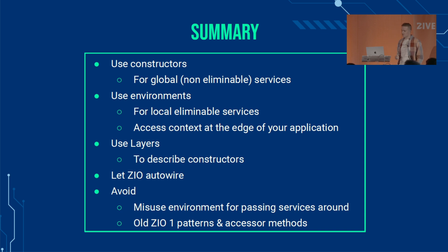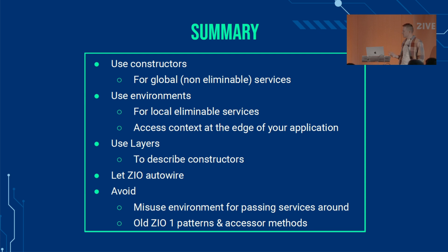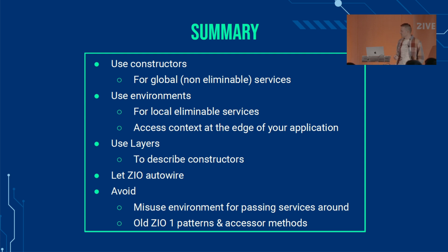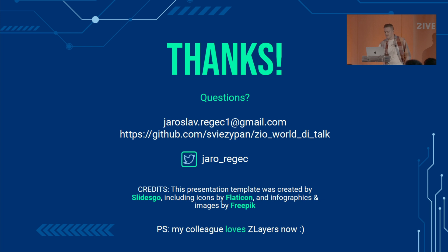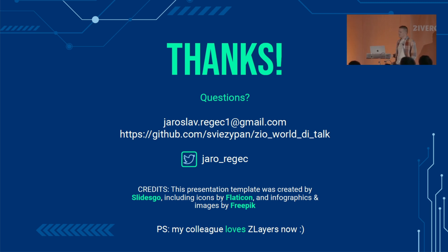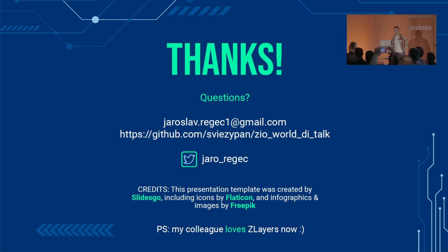To sum up, the rules of thumb: use the constructor for global services, use the environment for local eliminatable services, use layers to describe constructors, use ZIO auto-wire, and avoid old patterns — misusing the environment for dependency injection, and accessor methods which in my opinion do more harm than good. My colleague loves ZLayers now. It was just a 10-minute talk, so if you didn't catch any code, make sure to go to my GitHub and check it out. Thank you very much for listening.